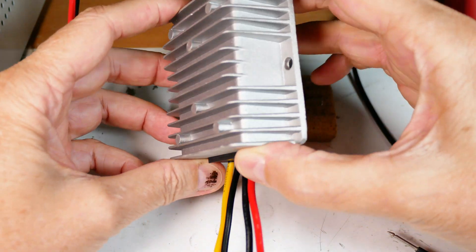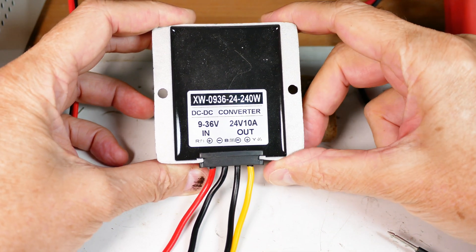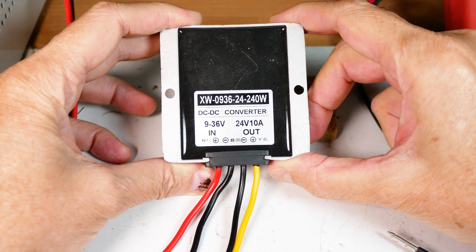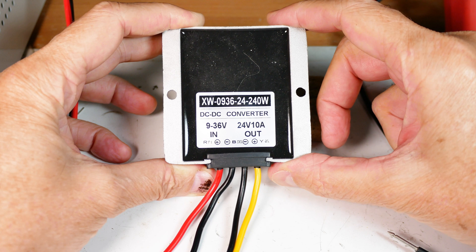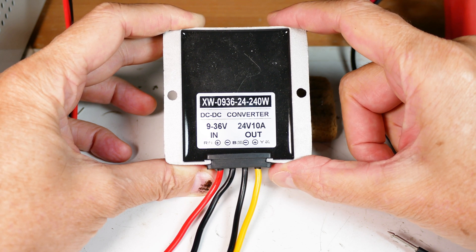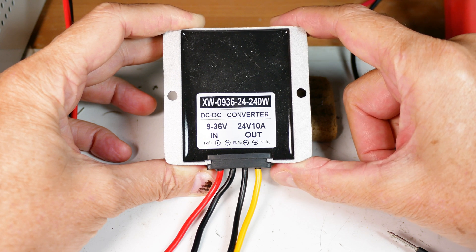This unremarkable looking chunk of aluminum with some silicone filling solves some pretty interesting problems with things like solar panels and even inside automobiles where maybe you have 12 volts and you need 24 volts. Let's take a look at this and see some of the applications you can use it for.